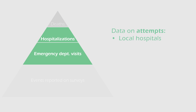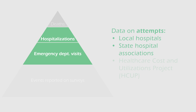One area where we've been able to expand available information is the National Violent Death Reporting System, which includes data from death certificates, medical examiners and coroners, and law enforcement. Local hospitals have inpatient data on people hospitalized due to suicide attempts. State hospital associations are often willing to share inpatient data, and partnerships with them can be valuable. There's also the HCUP system — the Healthcare Cost and Utilization Project — which has a national inpatient sample as well as an emergency department sample.